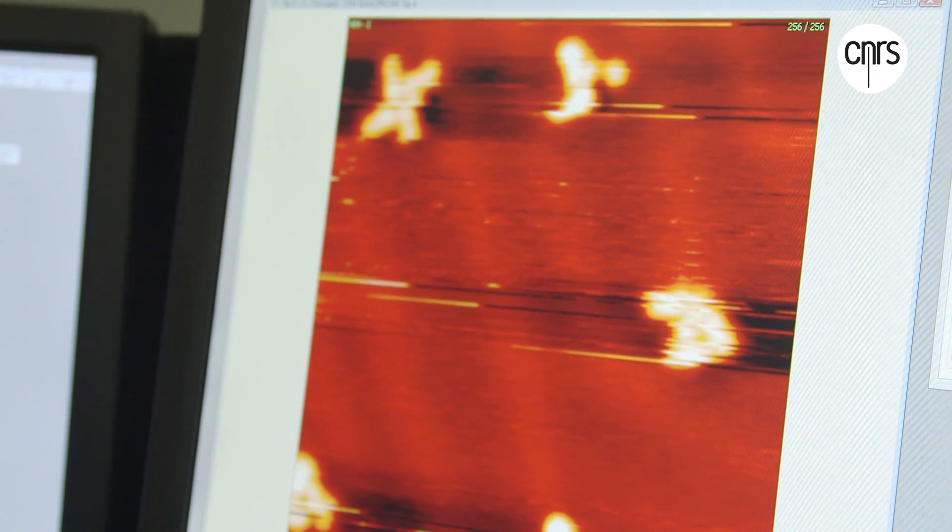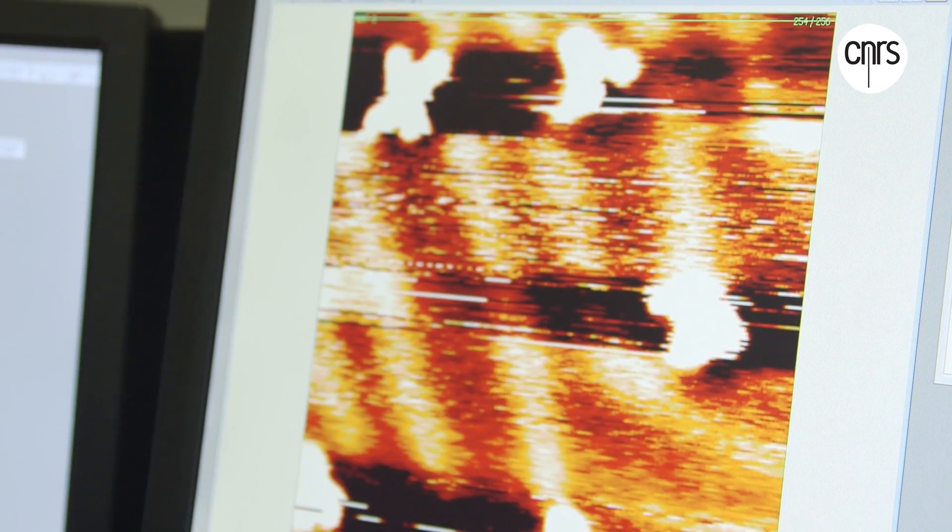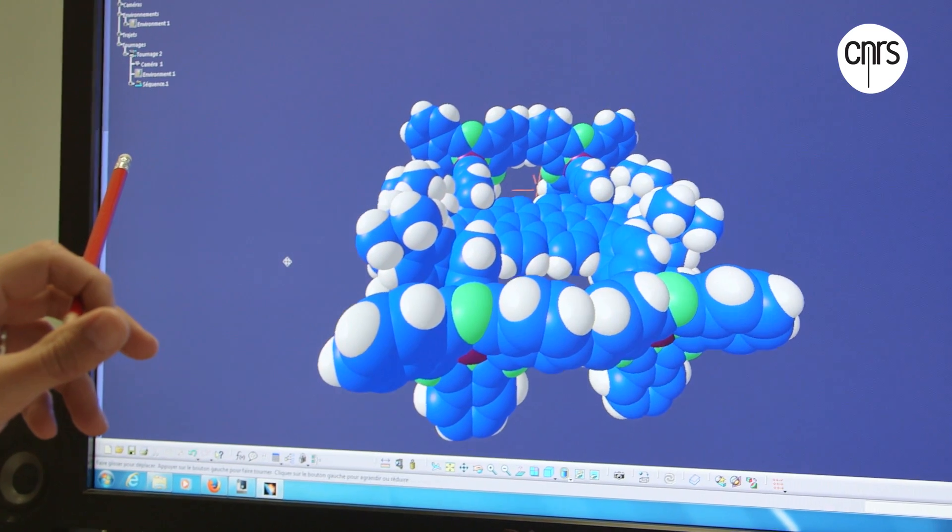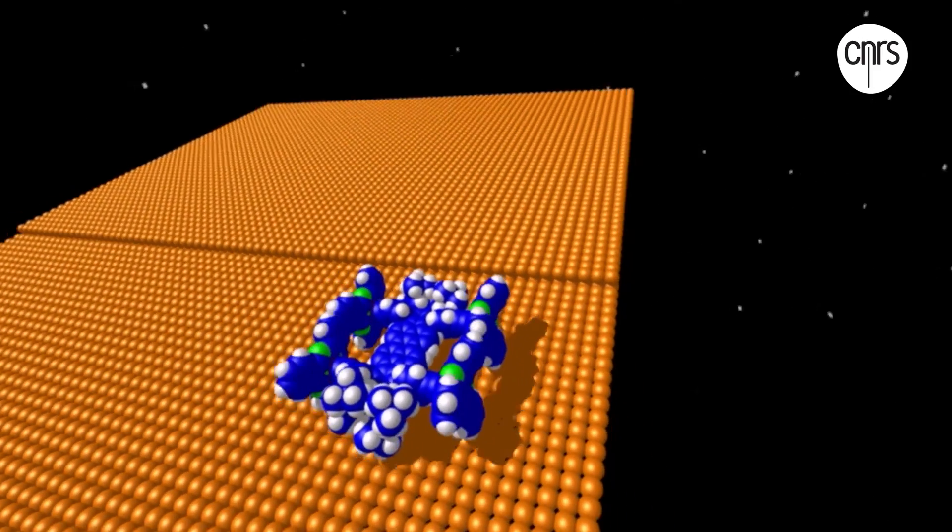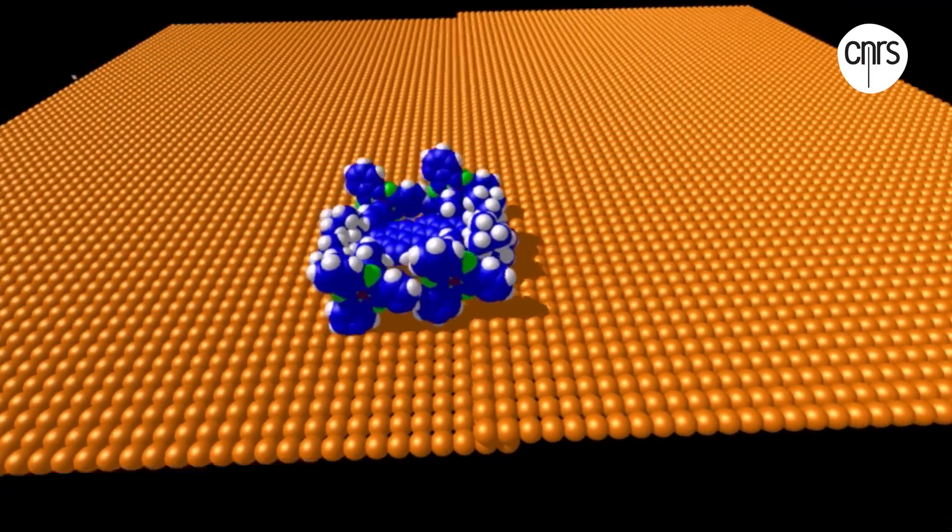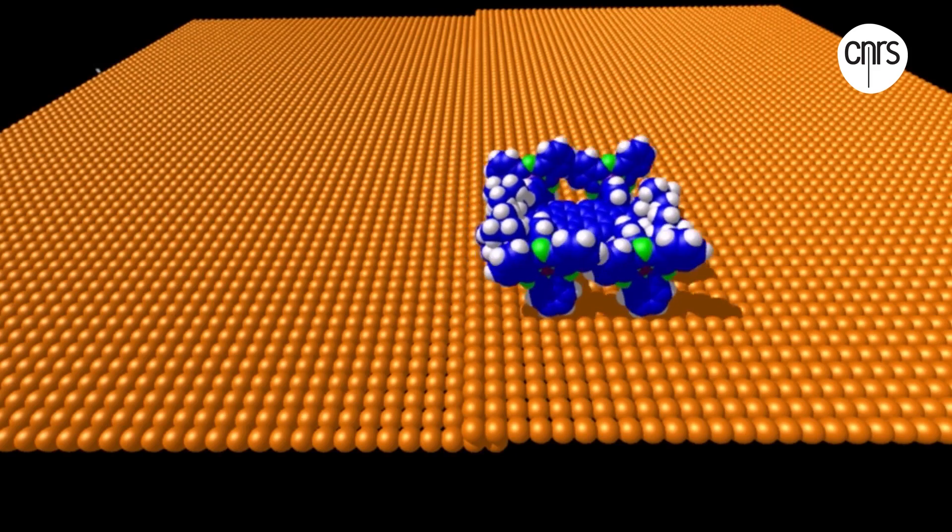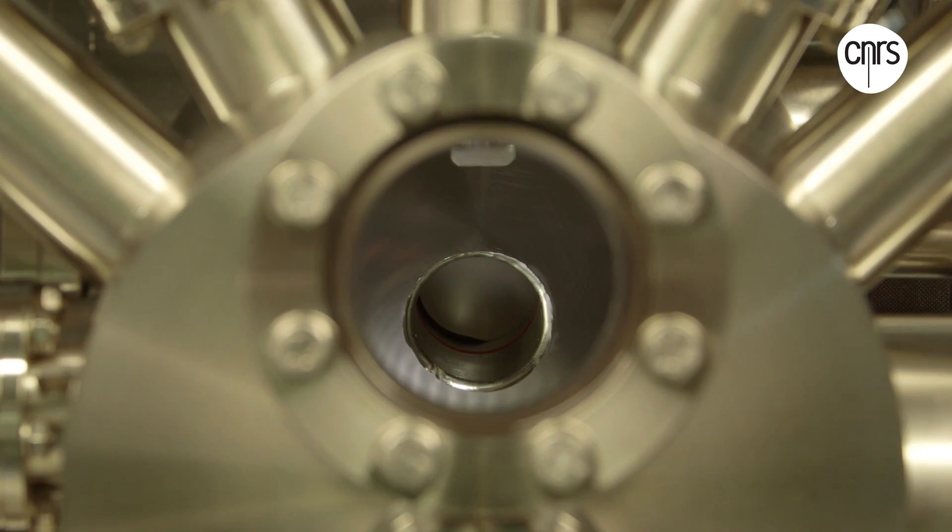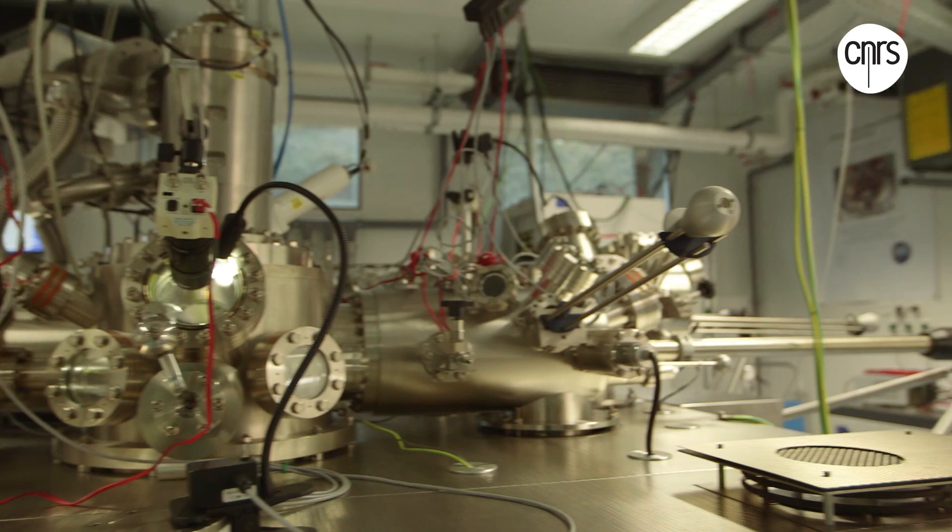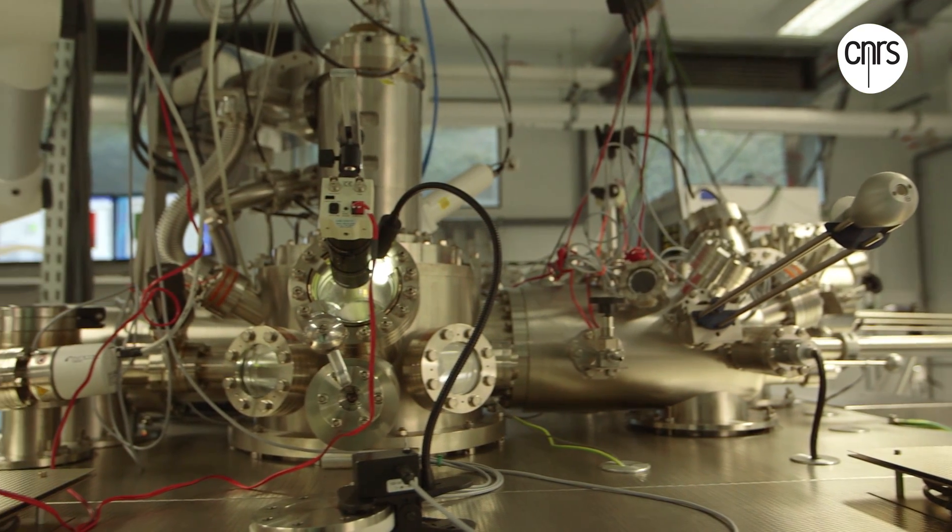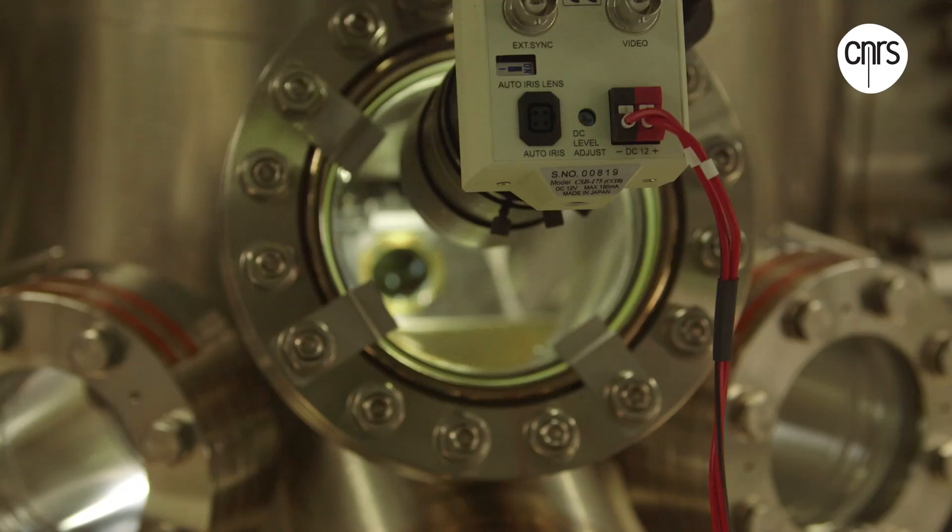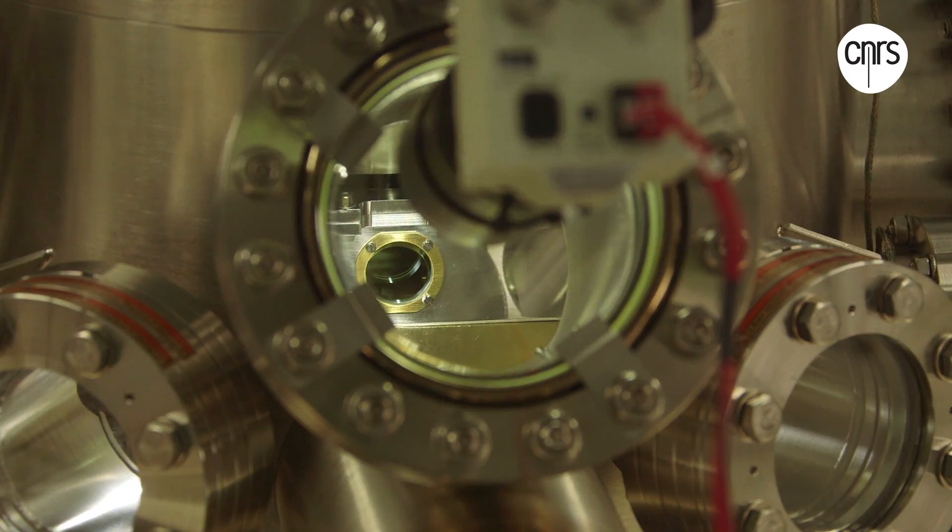The race will be invisible to the naked eye. The vehicles are a million times smaller than a millimeter. In order to see them, the researchers use a device called a scanning tunneling microscope, or STM. The specific microscope used here in Toulouse is one of the few STMs in the world with several separate scanning tips that will allow four drivers to compete at the same time.